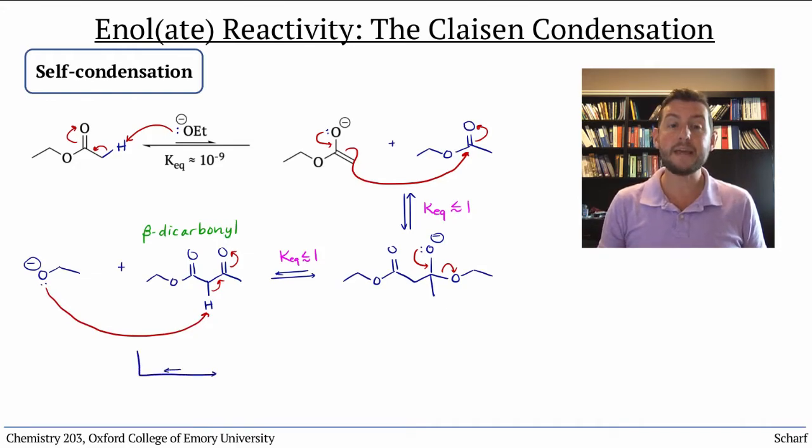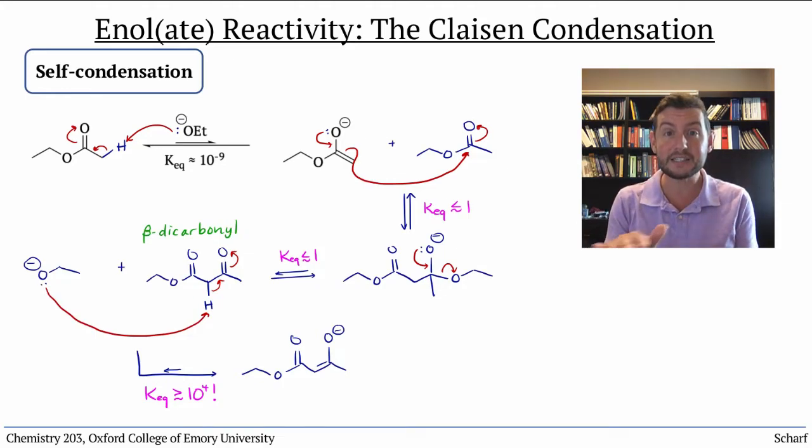The ethoxide base that we have around is plenty strong enough to deprotonate this, with a Keq of about 10 to the 4. This final step drives the whole reaction forward. Without it, the Claisen condensation just doesn't happen.